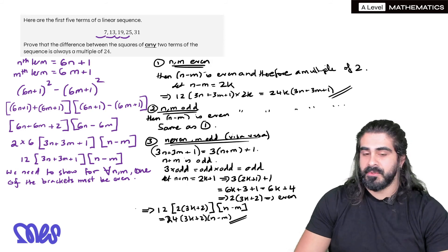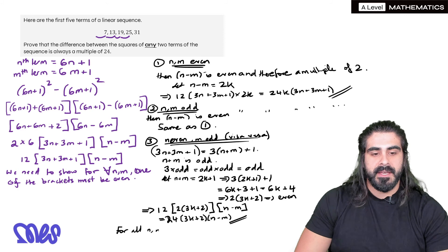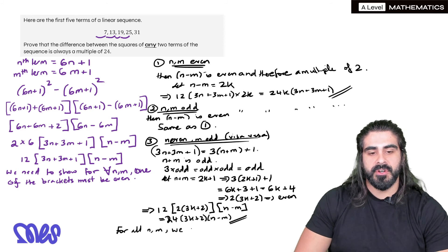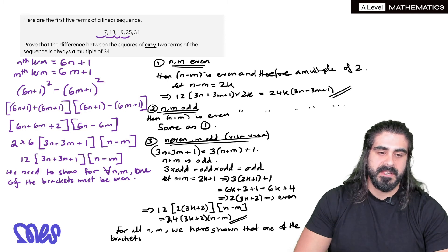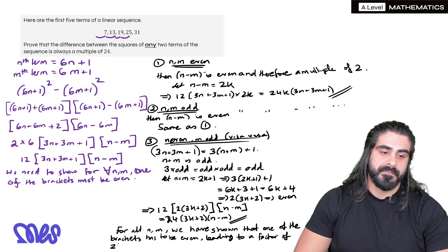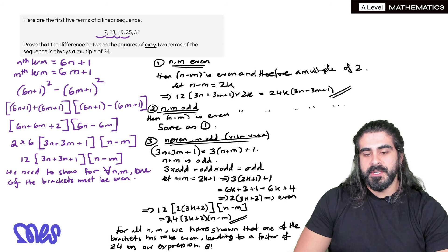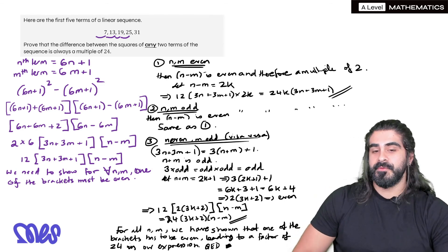So now we can just write a little concluding statement. So we could say for all n and m, we have shown that one of the brackets has to be even leading to a factor of 24 in our expression. And we can say proved, you could say QED, you could color in a box, it's up to you, or you could tick it and say proved.